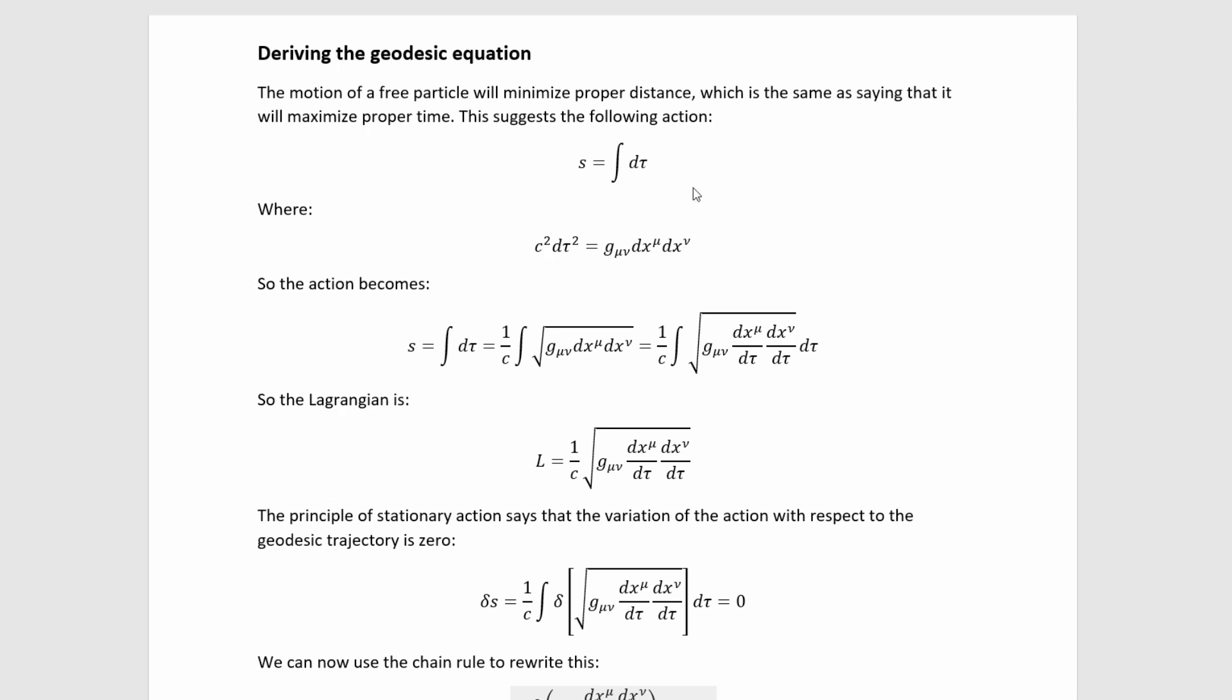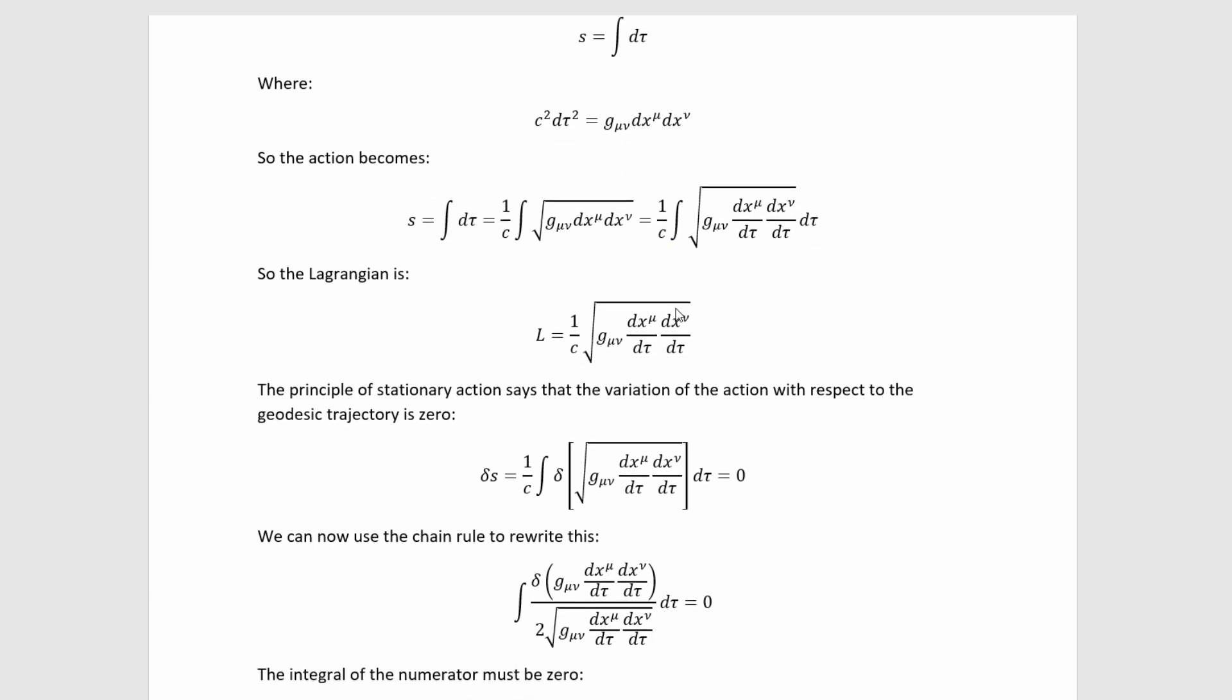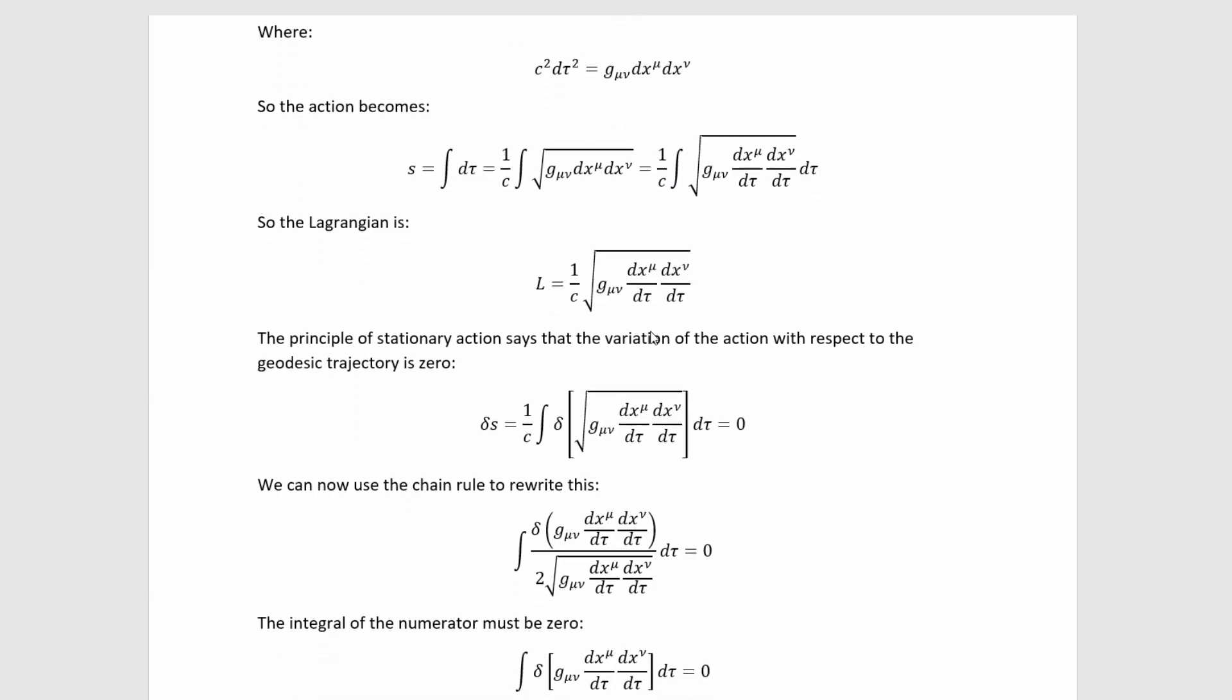The most common thing to do here is to use proper time as the parameter, and so it's useful to remember that the fact that it minimizes proper distance is equivalent to saying that it maximizes proper time. Therefore, we can take this to be our action, and that should be extremized. We have a formula for the proper time given by the line element of the metric tensor. We can plug that in, and that gets us here, which means we have this as our Lagrangian.